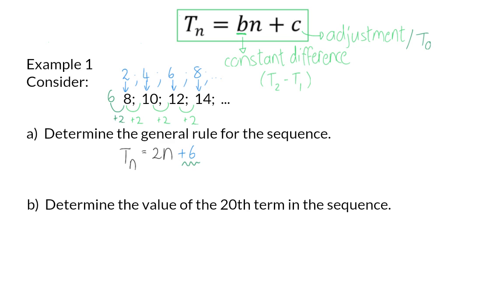Part b: Determine the value of the 20th term in the sequence. We now already have a general rule, so if we want to determine the value, the Tn, of the 20th term in the sequence, I can take the general rule and say T20. And to determine this, I will simply change n to the 20th term in the sequence.